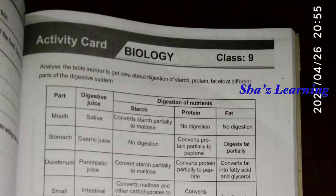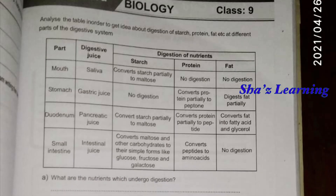Just go ahead and take a table. One is the body part. The digestive part is the body part. Digestive juice, digestive of nutrients — starch, protein, fat. What happened to them?